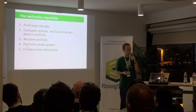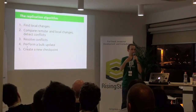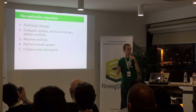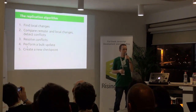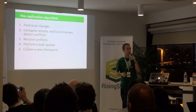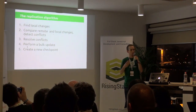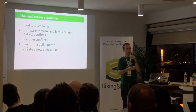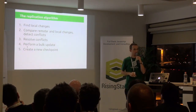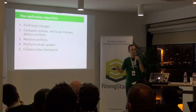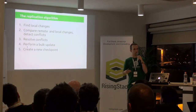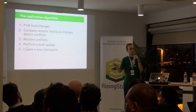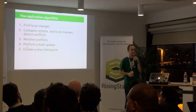And the algorithm has five steps. We find all changes that have been made locally. Then we compare them with changes that have been made on the server and detect any conflicts. The next step is conflict resolution, which is manual. As we have already heard today, there is no way to do that automatically. And once we have everything resolved, we can perform a bulk update — basically, the client tells the server, here are the changes I need you to make in your data. And at the end, we create a new checkpoint, so that next time we run the synchronization algorithm, we can synchronize only changes made after this last checkpoint. And then we run the same algorithm switching server and client, and we have full replication done.